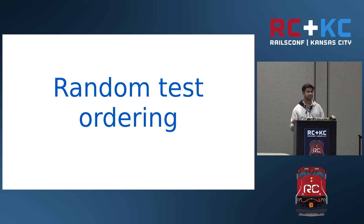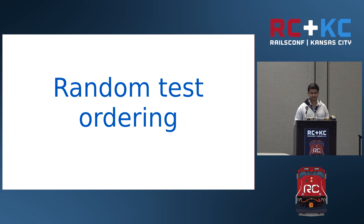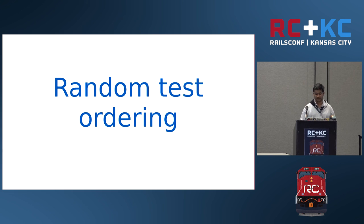You might have faced issues while running tests if tests depend on the order in which they are run — those are not good tests. If you run them in some other order, they will fail. Before Rails 5, the order Rails uses internally to run tests was not set to random. But now it is set to random by default. So we are a step closer to having parallel tests.